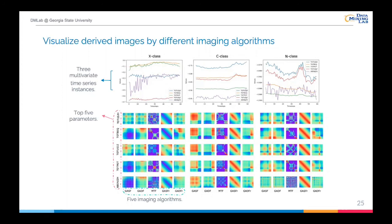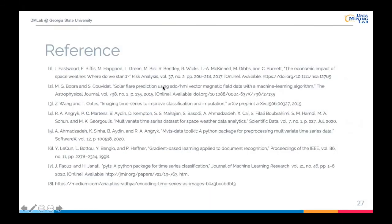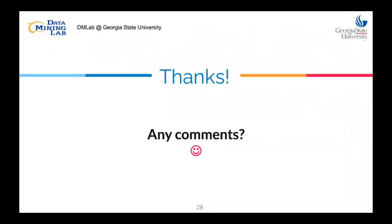This study provides a new angle to approach the flare forecasting problem by converting multivariate time series into images. With adding radial information into the original GASF, the modified GASF achieved significant improvements in the classification task. Knowing the effectiveness of this new approach, we are going to explore more appropriate weighting functions in the future. Here are the papers referred to for making these slides. Thank you for your attention — please feel free to let us know if you have any questions or advice about this work.